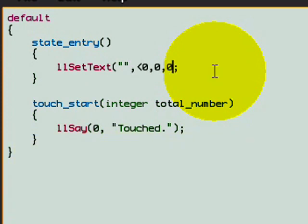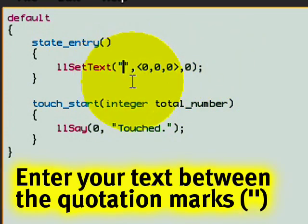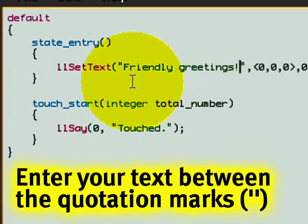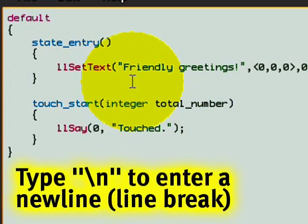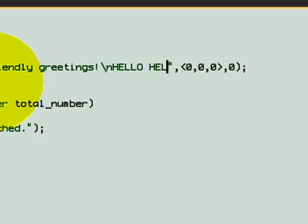Don't worry if they seem a little cryptic at first. It's pretty simple. So this one here between the quotation marks is what you want the text to say. Friendly greetings is what I like to say. If you want a new line, do this backslash and n and now type in another line. Like hello, hello.